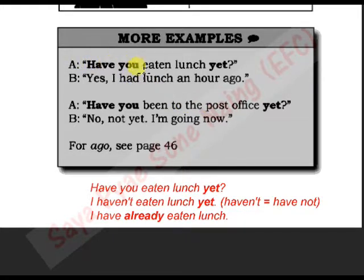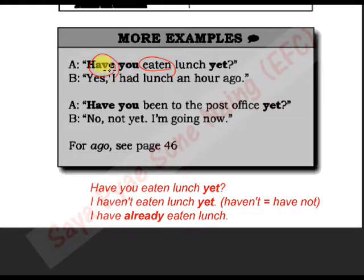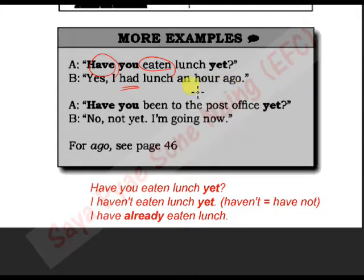Have you eaten lunch yet? Have you? Have you eaten — past participle — have past participle? Have you eaten lunch yet? Yes. I had lunch an hour ago. Had — past participle — an hour ago. I had lunch an hour ago.